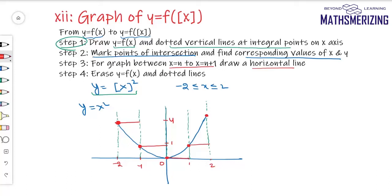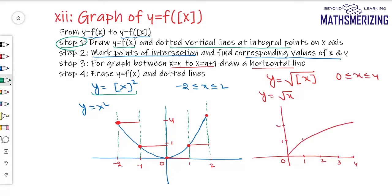I'll take up another example. I have to draw the graph of y = √(⌊x⌋) when x lies between 0 and 4. My basic graph will be y = √x — that's the graph of √x. Now I'll draw vertical lines at integral points: at x = 0, 1, 3, and 4, and I'll mark the points of intersection.